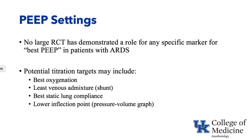Setting PEEP is challenging because no large randomized control trial has demonstrated a role for any specific marker to determine the best PEEP in patients with ARDS, and even less is known for other types of hypoxemia. Potential titration targets include best oxygenation, least shunt or venous admixture, best lung compliance, or using the lower inflection point characterized on a pressure-volume graph.